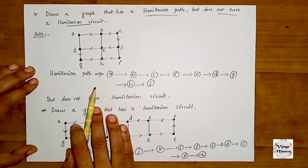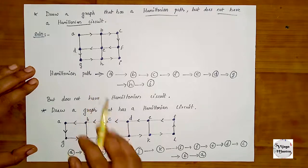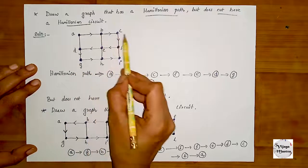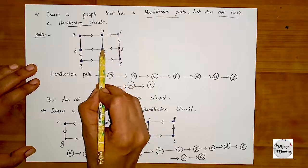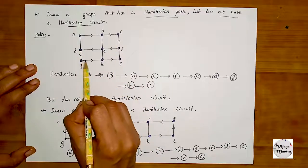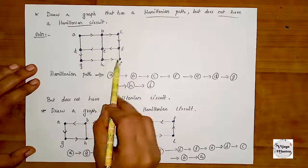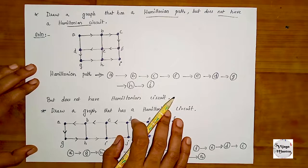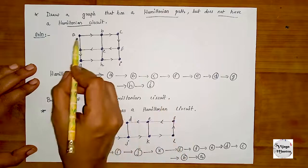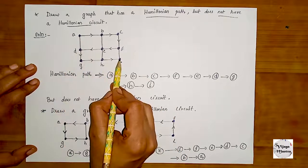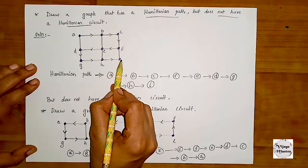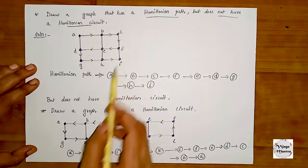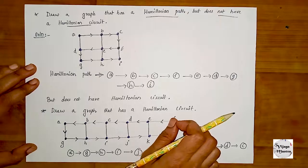The starting and ending vertices are not the same, so it does not close back. The path is: A to B, B to C, C to F, F to E, E to D, D to G, G to H, H to I. All vertices are completed, but this is not a Hamiltonian circuit — this graph does not have a Hamiltonian circuit.